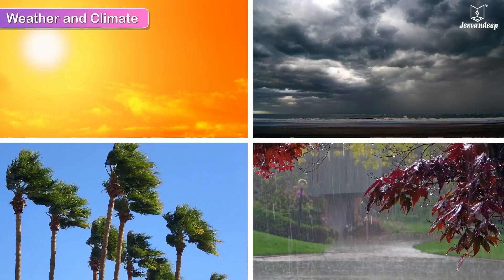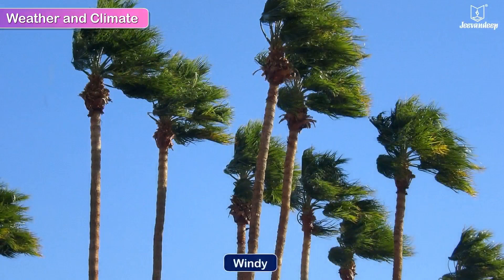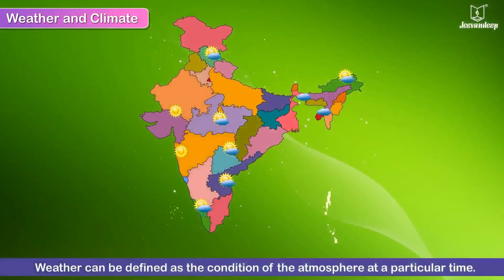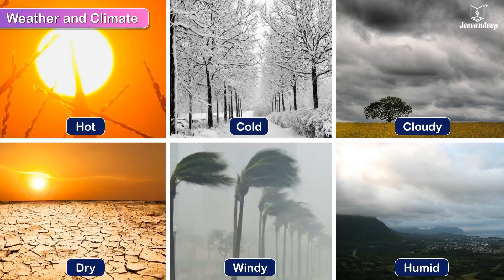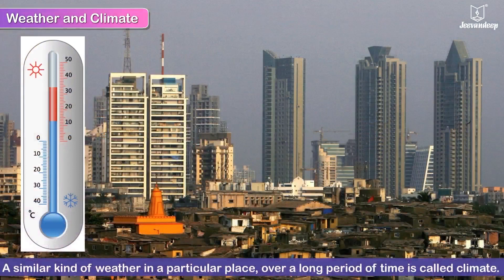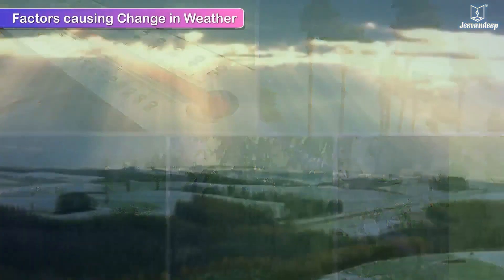Weather and climate. We experience weather changes frequently. Some days are hot and sunny, other days it may be a little cloudy or windy. Weather can be defined as the condition of the atmosphere at a particular place and time. The weather can be hot, cold, cloudy, dry, windy, or humid and generally keeps changing. A similar kind of weather in a particular place over a long period of time is called climate.